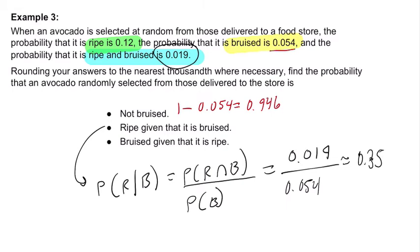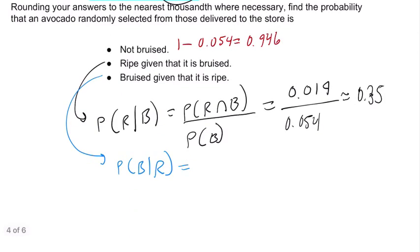Now what about bruised given ripe? You change the order here—bruised given ripe. Think about that for a moment. R and B is the same as B and R, but I'm just going to write it out. The probability of B and R over the probability of R.